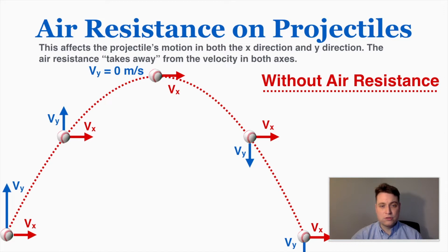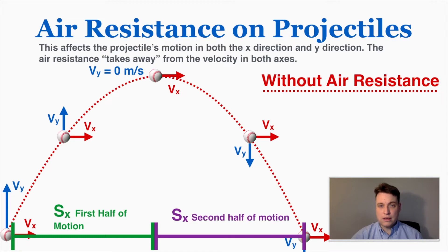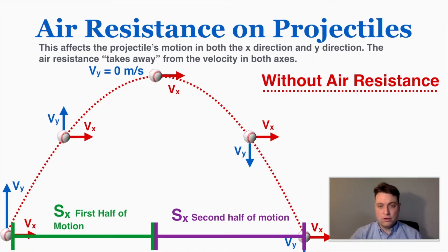Another noticeable thing is that the x-direction displacement in the first half of the object's motion is perfectly equal to the x-direction displacement in the second half. It's symmetrical in that way. So if you see an object moving parabolically in a perfectly symmetrical path, you know that there's no air resistance acting on the object.